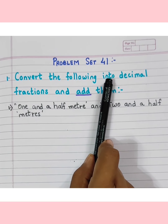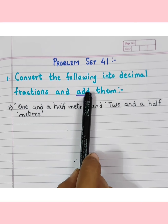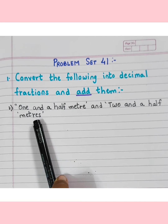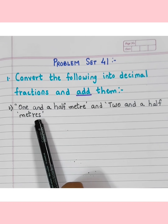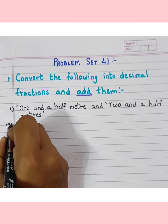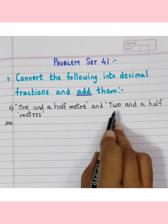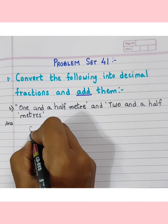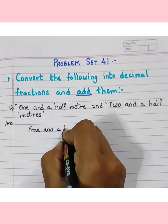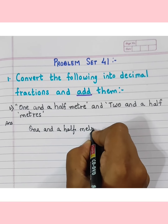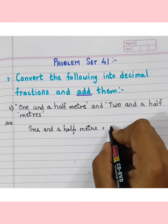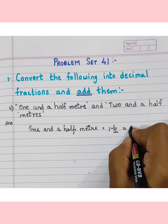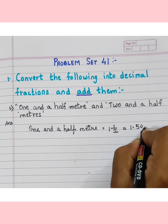Convert the following into decimal fractions and add them. Our first values are 1 and a half meter and 2 and a half meters. First we will write 1 and a half meter. In fraction form that is 1 and 1 upon 2, which we can write as 1.50 meters.